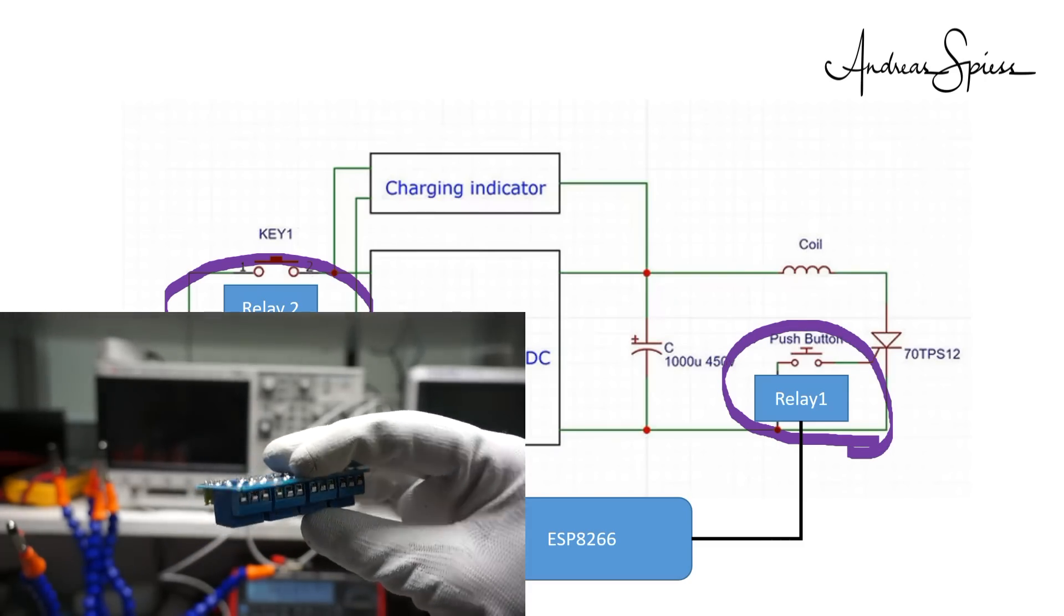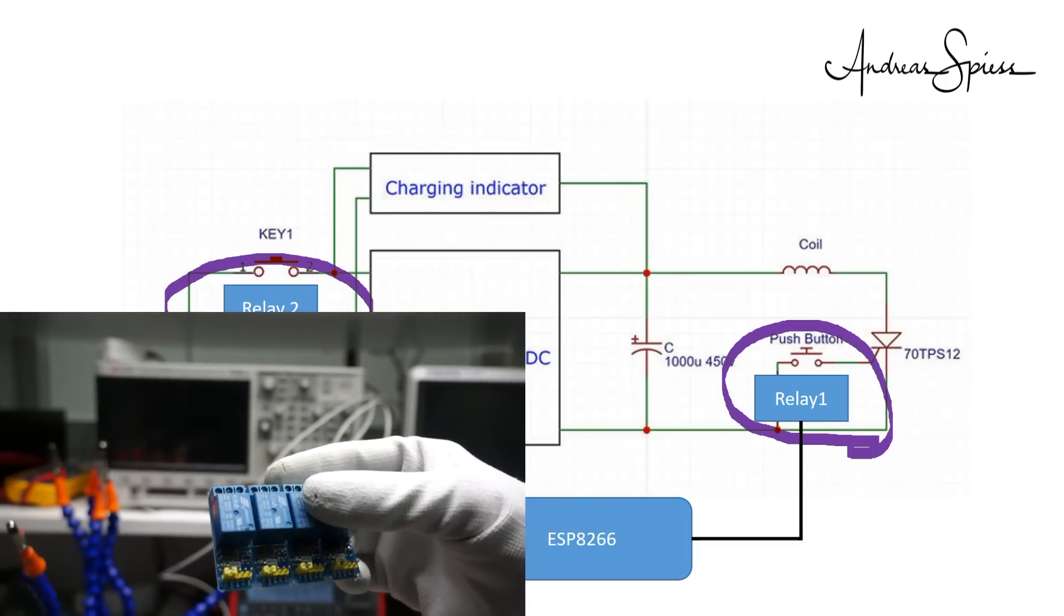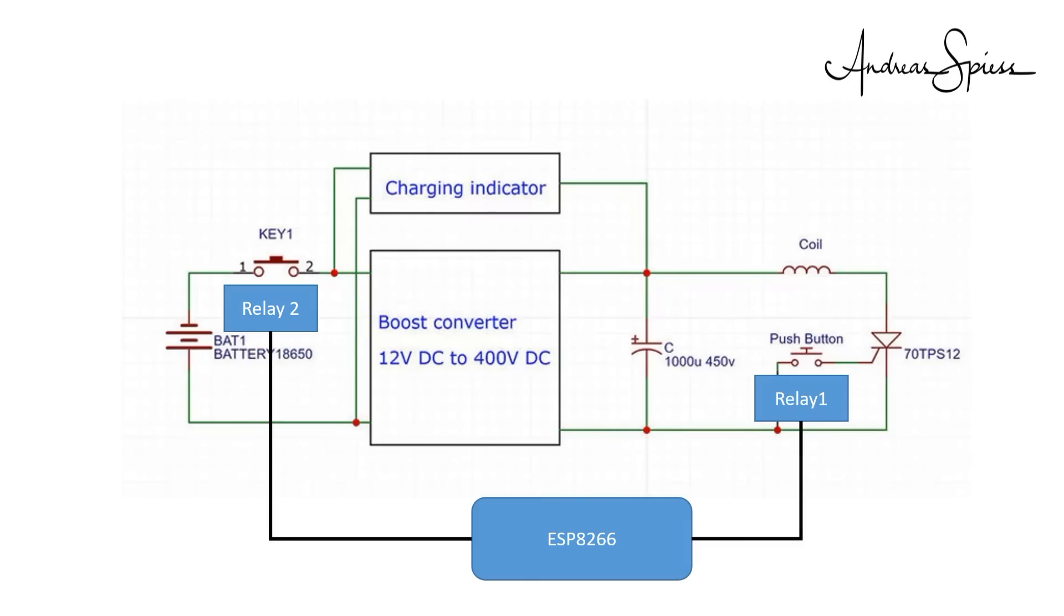The last step was to measure the voltage across the capacitor to decide if the gun is armed. How do you measure 400 volts with an ESP? You create a voltage divider. You can use the following formula. I did not need an exact result here, so I choose 410 kilo ohms and 810 ohms. Like that, the voltage should always be below 1 volt.